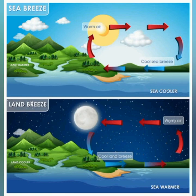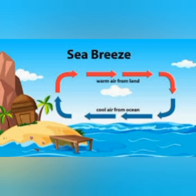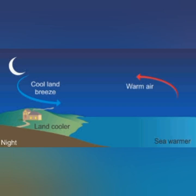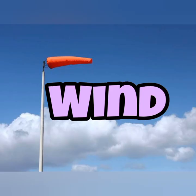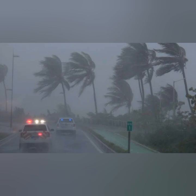In daytime, cool air blowing from the sea to the land is known as sea breeze. At night, cool air blowing from the land to the sea is known as land breeze. The moving air is called wind. When the speed of wind increases, it causes storms and cyclones.